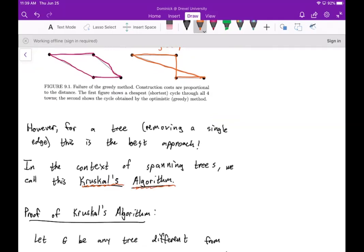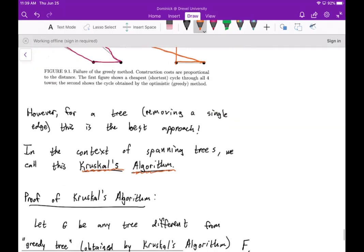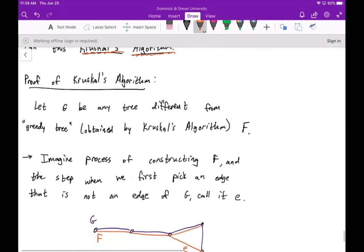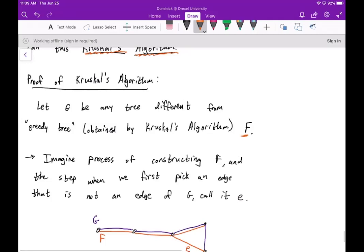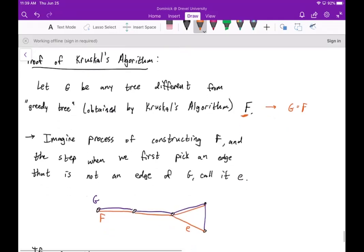Now the proof of Kruskal's algorithm is the following: we're going to let G be any tree that's different from our greedy tree that we attained by Kruskal's algorithm F. So what we want to show eventually is we want to show that G and F really have to be the same thing. So we're going to imagine the process of constructing F, and the step when we first pick an edge that is not an edge of G, we're going to call it e.